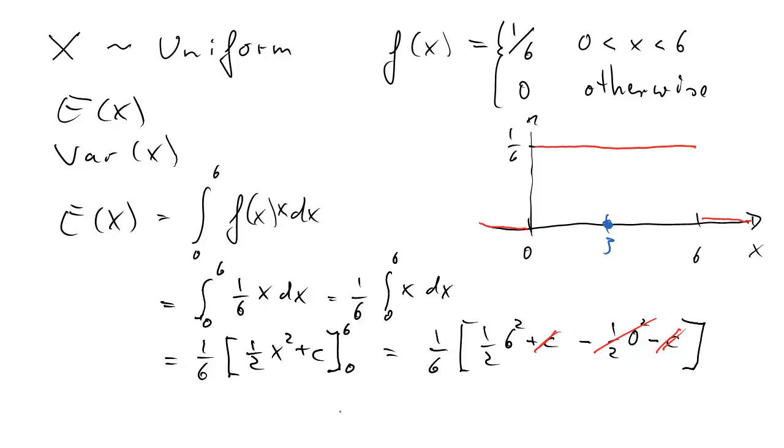We can cancel out this 6 and the squared. What we get is 6 and a half over 6, which is of course 3, which is exactly the solution we expected. That was the expected value.